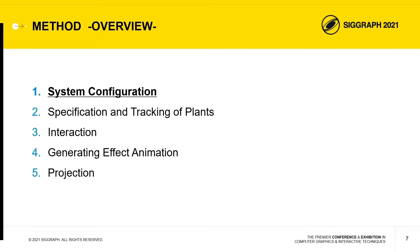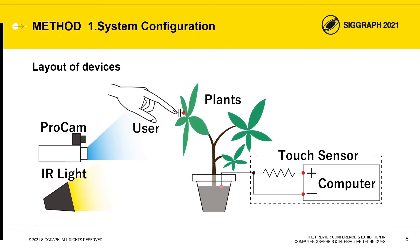We'd like to talk about our system configuration. Devices are set up as shown in the figure. Our projection targets, which are plants, are illuminated by infrared light. The ProCam system acquires target surfaces using the IR camera as candidate projection areas, and projects images to these surfaces via the projector. A touch sensor detects touch events, and a branched electrode of the sensor is inserted into the potted plants.